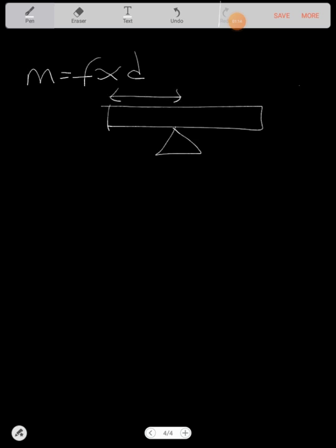Now, moment is equal to force times distance. Now this distance is perpendicular. If I have a force like this, a block, and there's a pivot, the distance that I need is this.